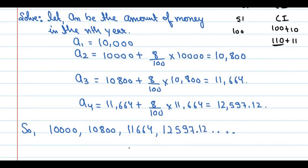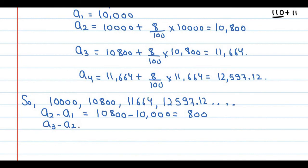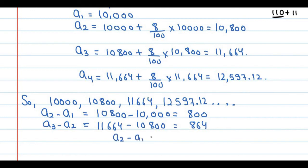Now we check whether the common difference is the same or not. a₂ − a₁ = 10,800 − 10,000 = 800. Similarly, a₃ − a₂ = 11,664 − 10,800 = 864. As you can see, the difference is not the same.